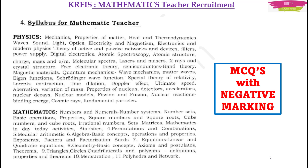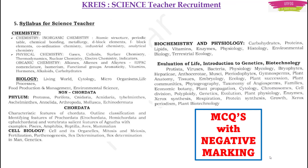Now coming to science teacher recruitment under Christ, aspirants will have to write chemistry and biology in paper 2. The marks deduction procedure is the same because negative marking will be there.